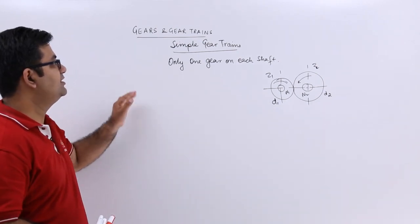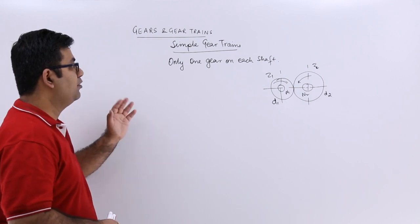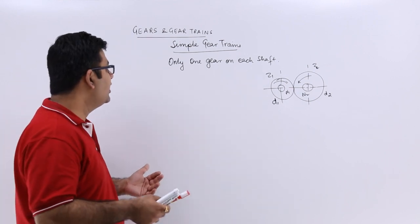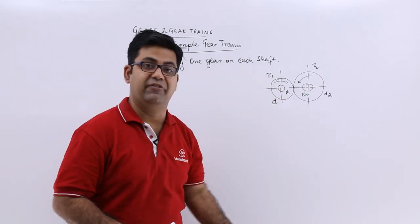Now let's talk about the simple gear train, that's the first kind of gear train in the topic of gear trains. What is a simple gear train? A simple gear train is a collection of gears in which you have only one gear on each shaft.